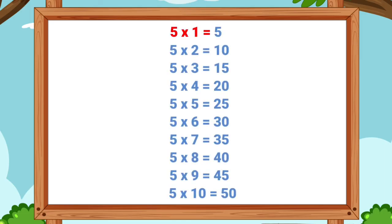5 ones are 5. 5 twos are 10. 5 threes are 15. 5 fours are 20. 5 fives are 25. 5 sixes are 30. 5 sevens are 35. 5 eights are 40. Five eights are forty. Five nines are forty-five. Five tens are fifty.